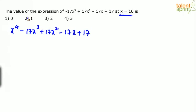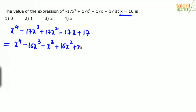We'll end up wasting 90 to 120 seconds, so let's do it in a smart way. We'll expand and split the expression: x⁴ as is, -17x³ taken as -16x³ - x³, since -16 - 1 = -17. Similarly, 17x² becomes 16x² + x², and -17x becomes -16x - x. Plus 17 as it is.